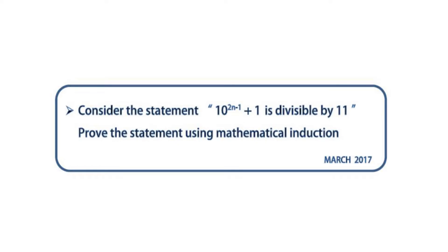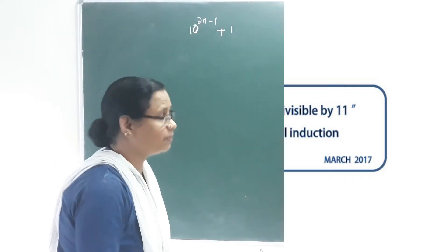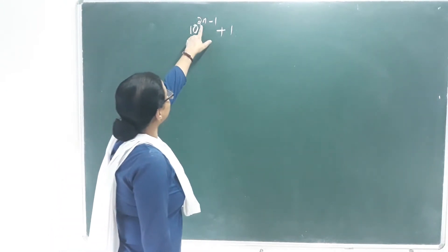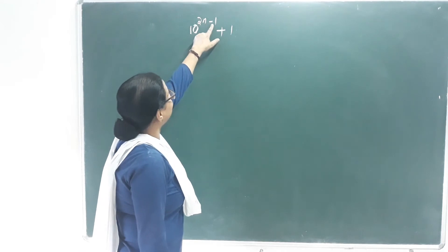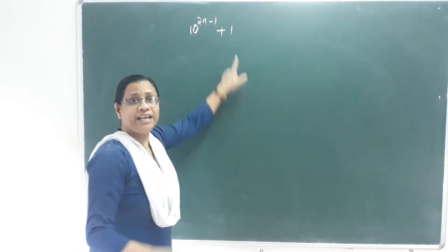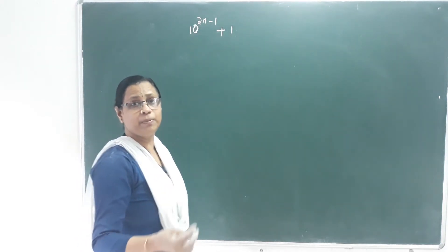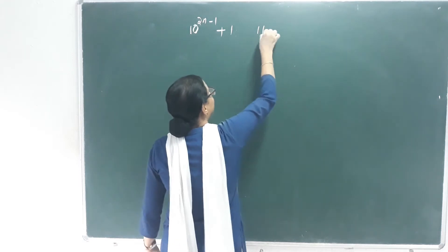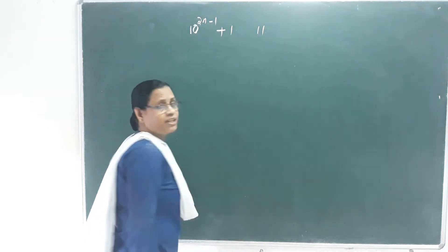Next question. Consider the statement: 10 raised to 2n minus 1 plus 1 is divisible by 11. Prove the statement by using mathematical induction. We will prove that 10 raised to 2n minus 1 plus 1 is divisible by 11.